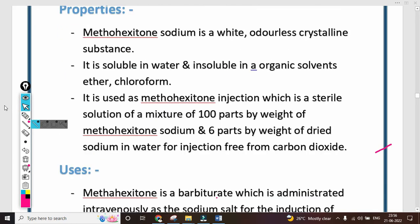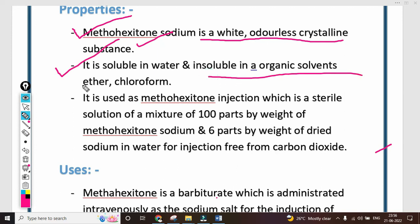In properties, we write its appearance - color, odor, texture. Methohexitone sodium is a white, odorless crystalline substance. It is soluble in water and insoluble in organic solvents like ether and chloroform. It is used as methohexitone injection, which is a sterile solution of a mixture of 100 parts by weight of methohexitone sodium and 6 parts by weight of dried sodium in water for injection, free from carbon dioxide.